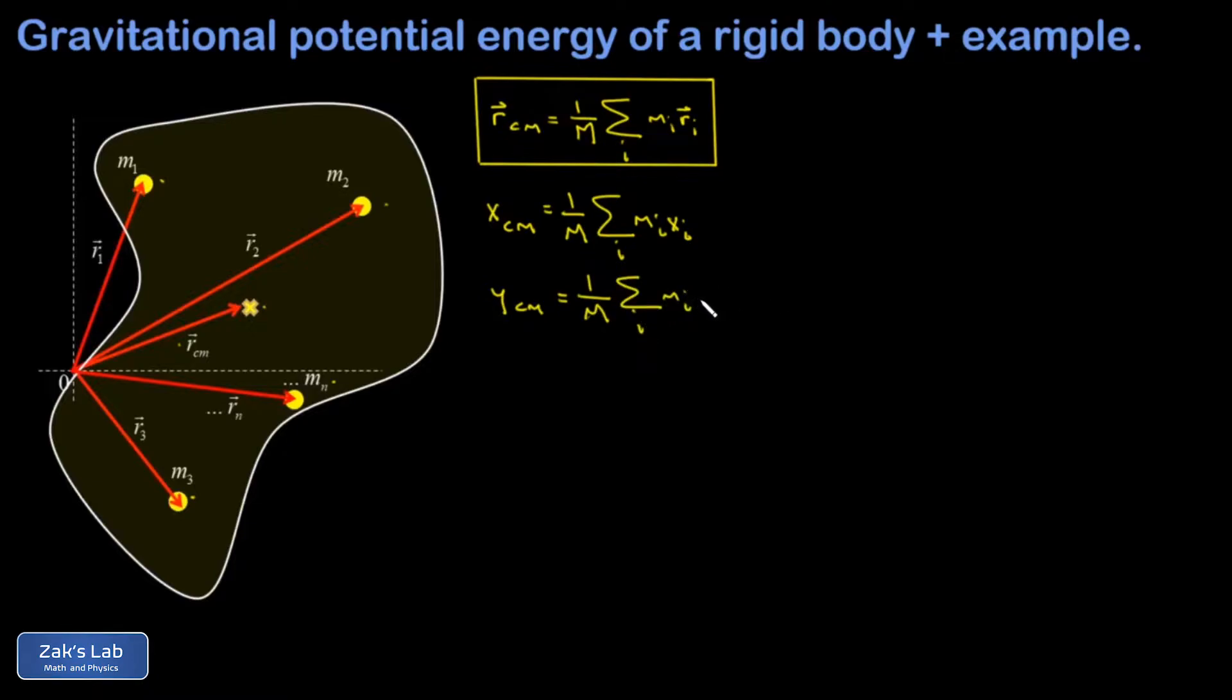And the y center of mass coordinate is similar: one over the total mass times the sum of each mi multiplied by its y coordinate. Now that second one is the one that we want because we're looking for gravitational potential energy and that depends on the y coordinate not the x coordinate.